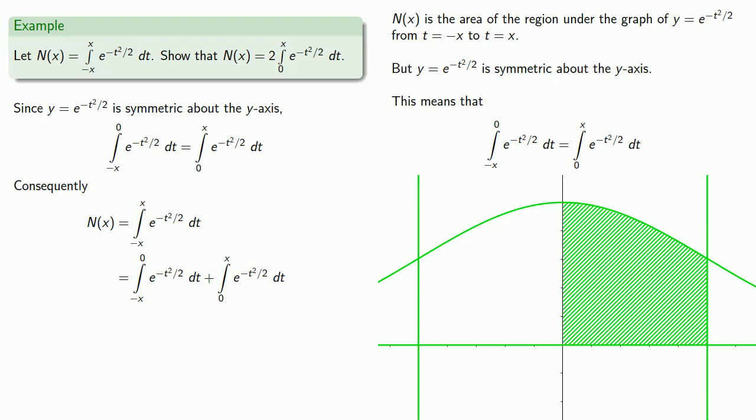Is that useful? We know that this integral from minus x to 0 is the same as the integral from 0 to x. And so now I have two copies of this definite integral from 0 to x, which gives us the result that we want.